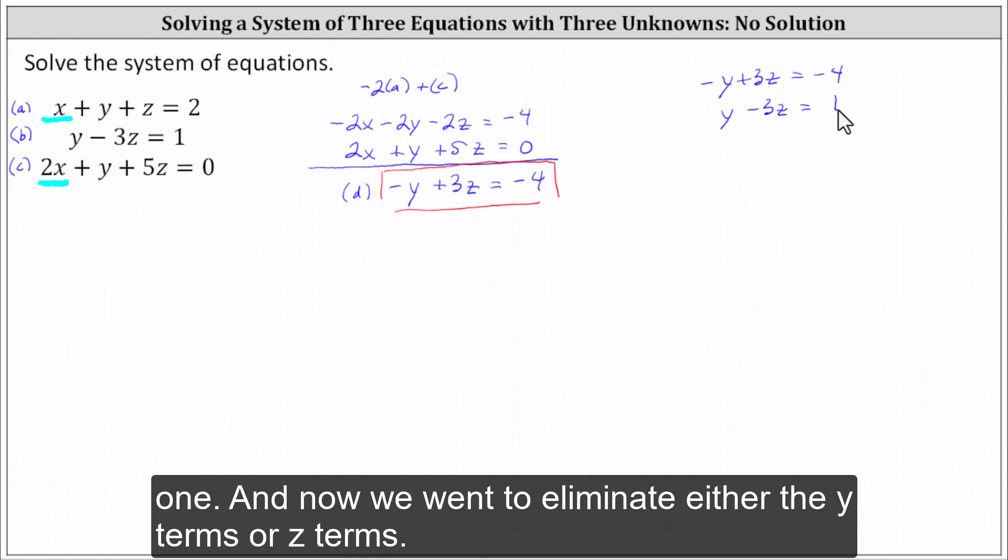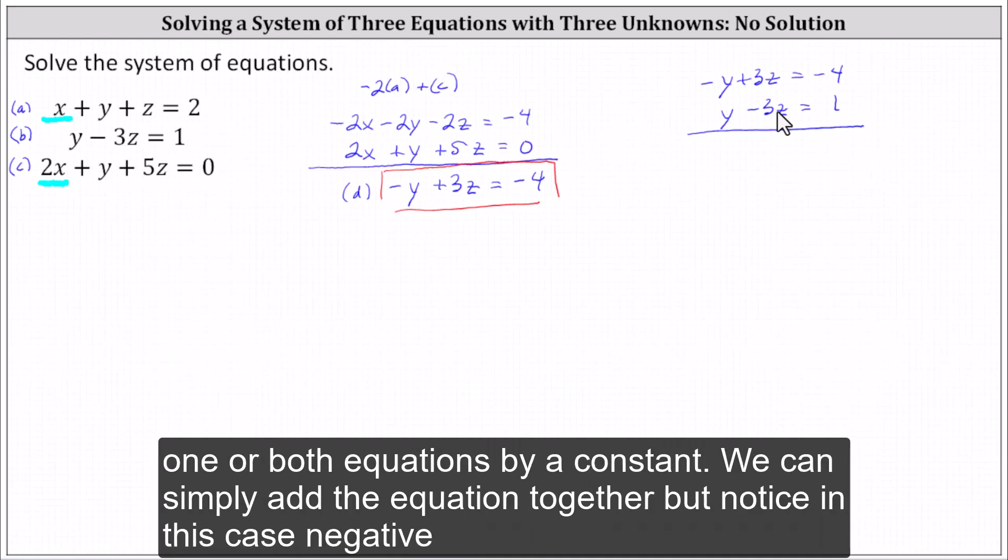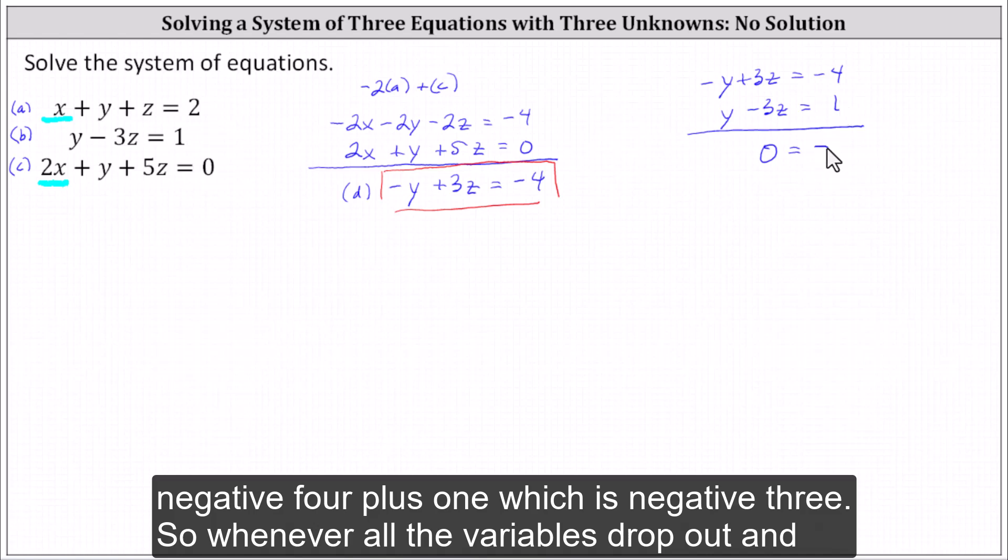And now we want to eliminate either the Y terms or Z terms. But notice in this case, both the Y terms and Z terms are already opposites. So we don't have to multiply one or both equations by a constant. We can simply add the equations together. But notice in this case, -y + y is zero, and 3z + (-3z) is also zero, giving us 0 = -4 + 1, which is -3.